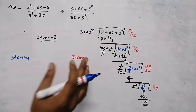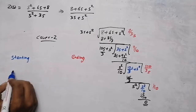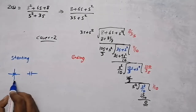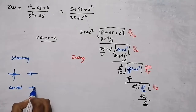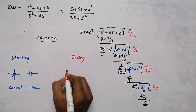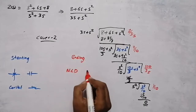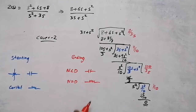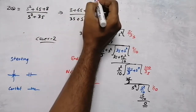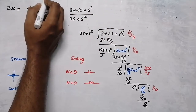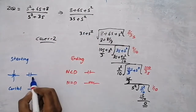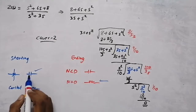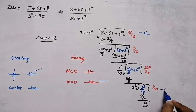In Cauer 2, the rules for finding start and end elements are opposite to Cauer 1. For the starting element in Cauer 2, check whether there is a pole at origin — if yes, the starting element is a capacitor; if no poles at origin, it is a resistor. For the ending element in Cauer 2, check the degree of numerator and denominator — if numerator degree is less than denominator degree, ending element is a capacitor; if degrees are equal, ending element is a resistor. Here we have a pole at origin, so the starting element is a capacitor. Degrees of numerator and denominator are equal, so the ending element is a resistor.